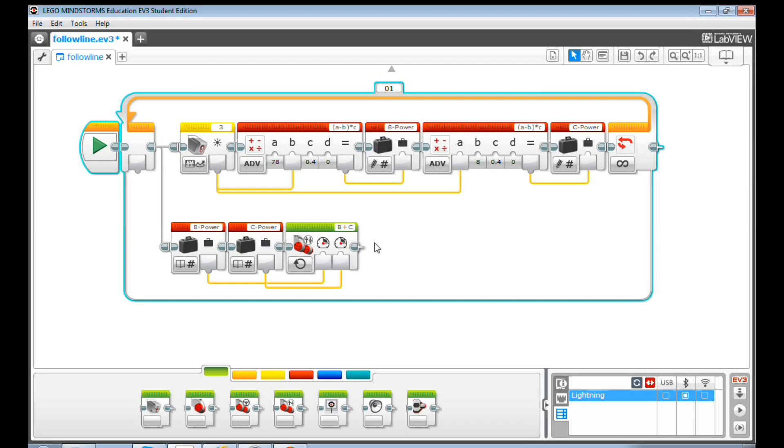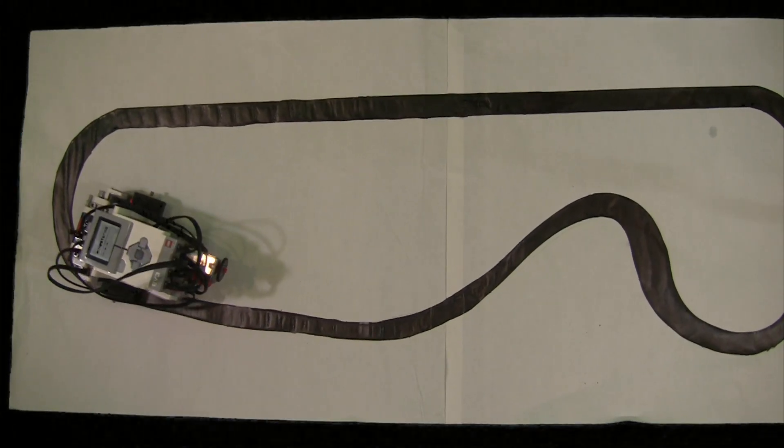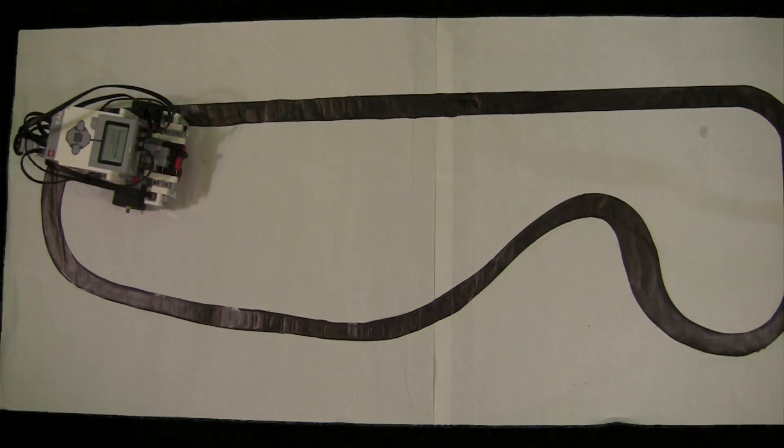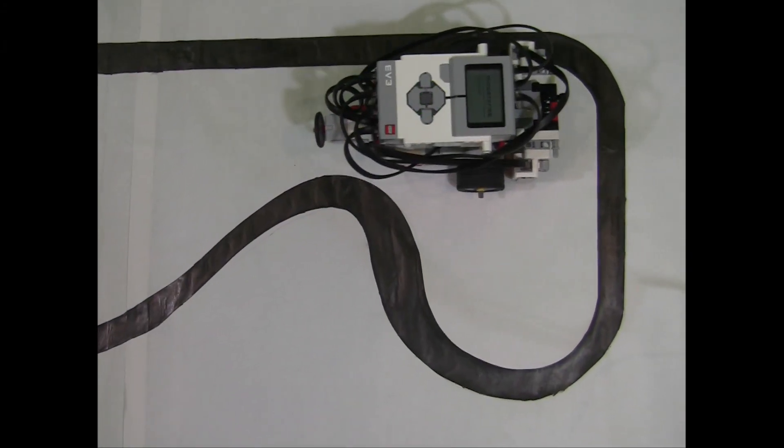Let's run this program on a curved line and see what happens. When the curved line is smooth, it works. When the curved line becomes sharp, the robot runs away from the line.